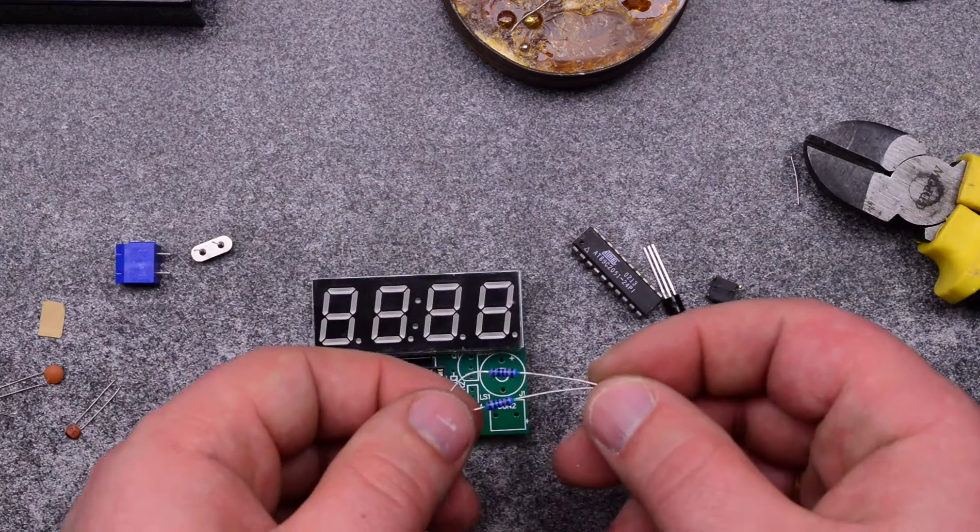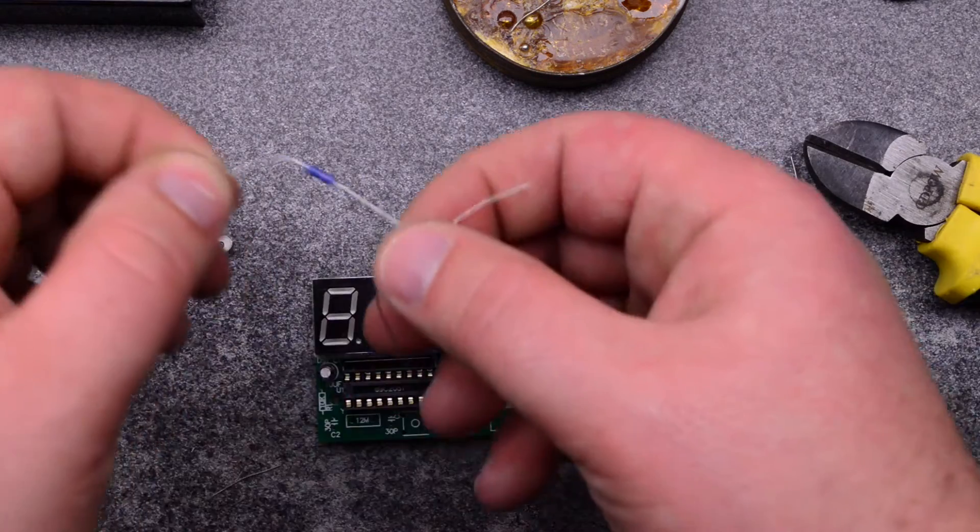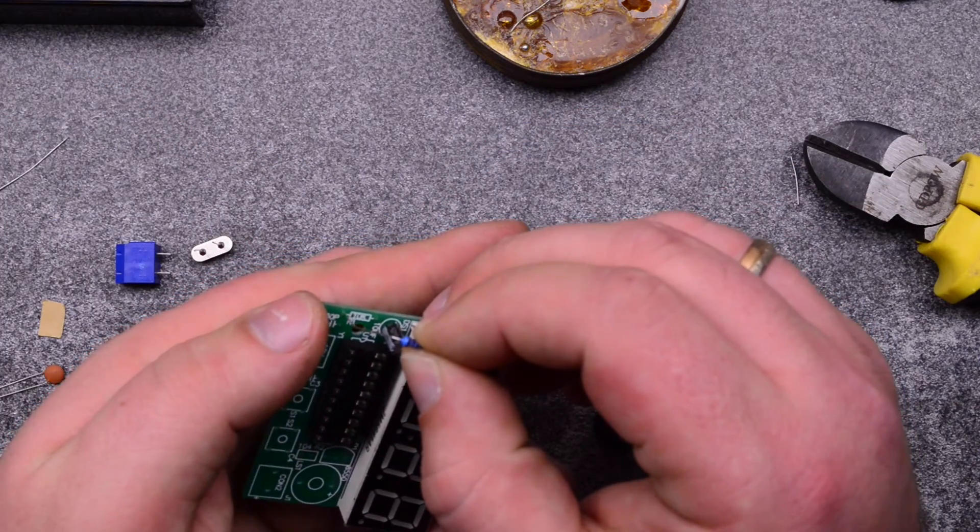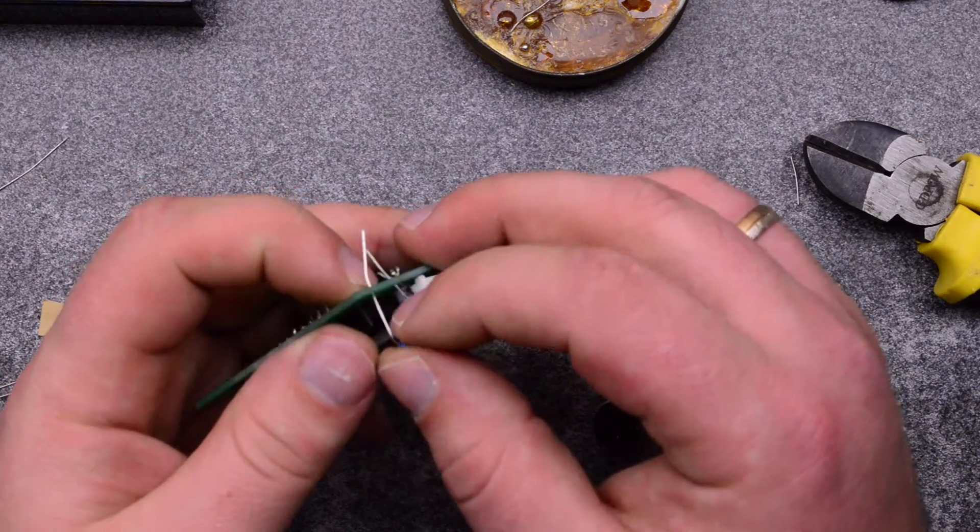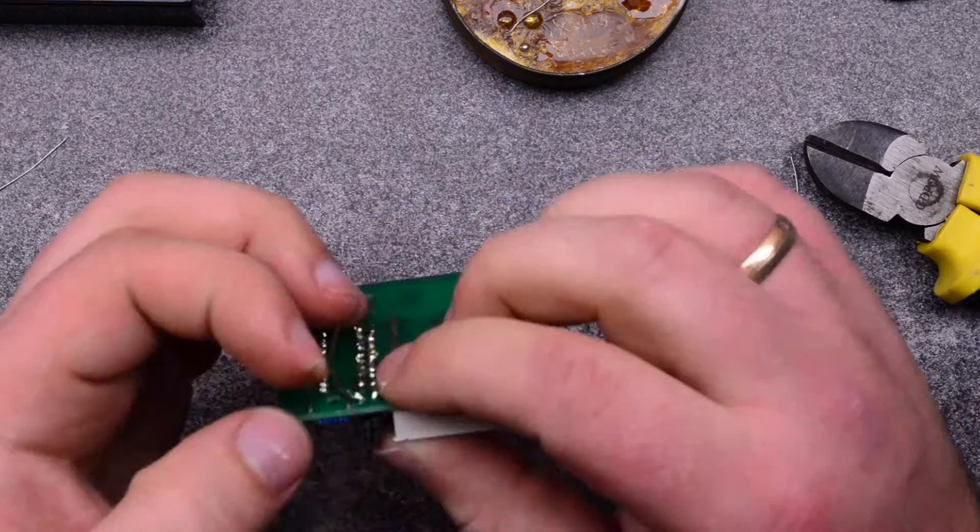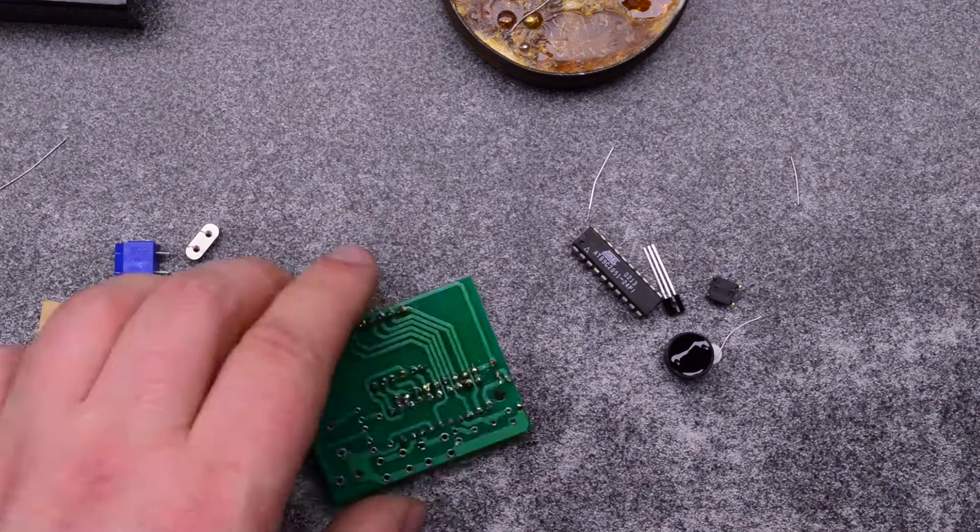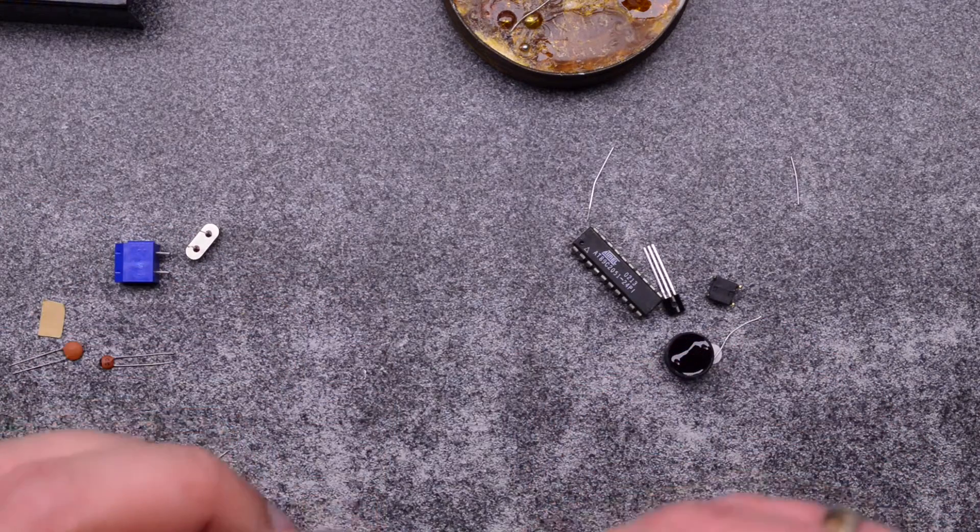We have two resistors which are 10k. And this is not polar sensitive so you can install it however you want it. You might as well install the other.